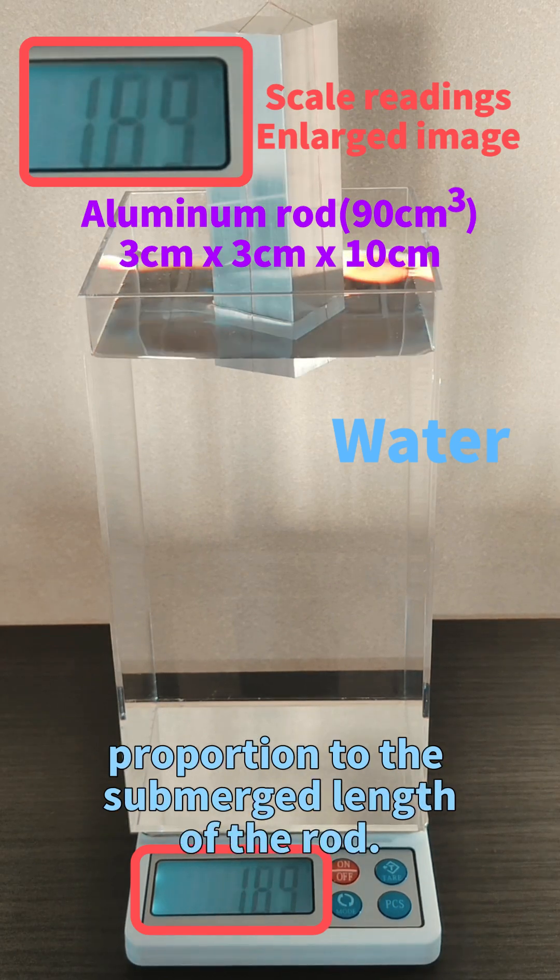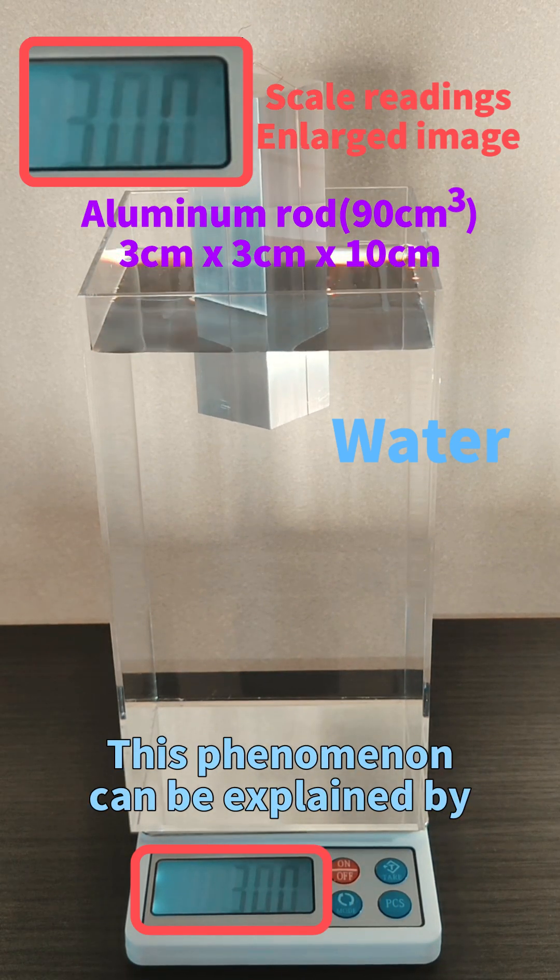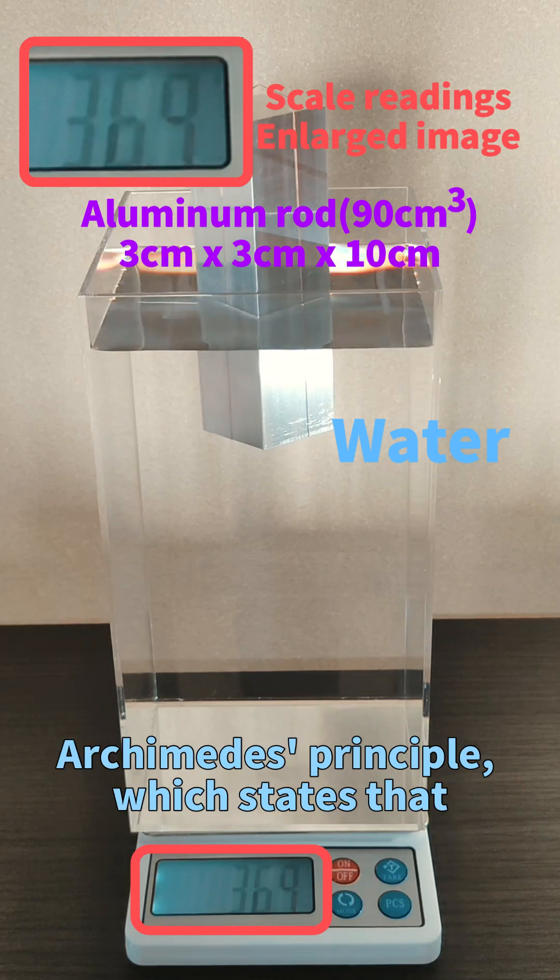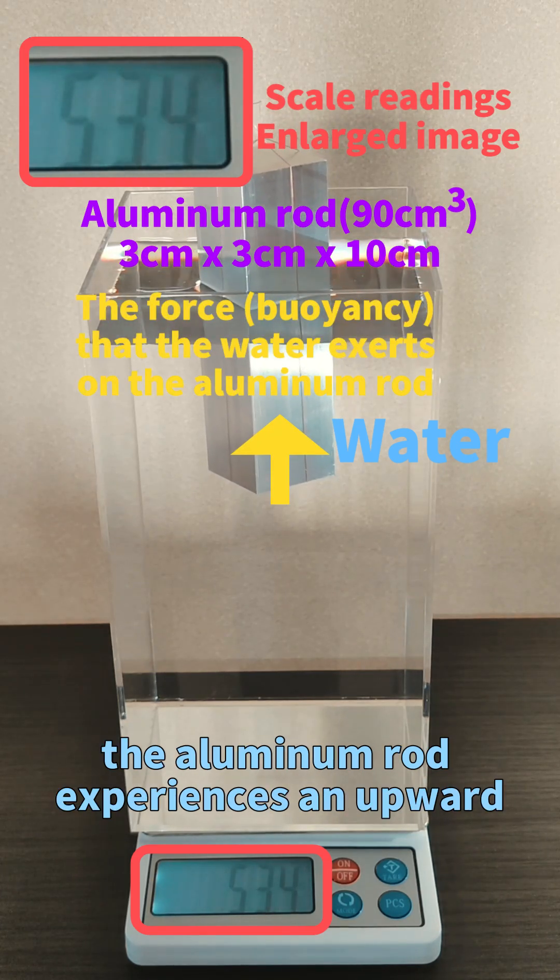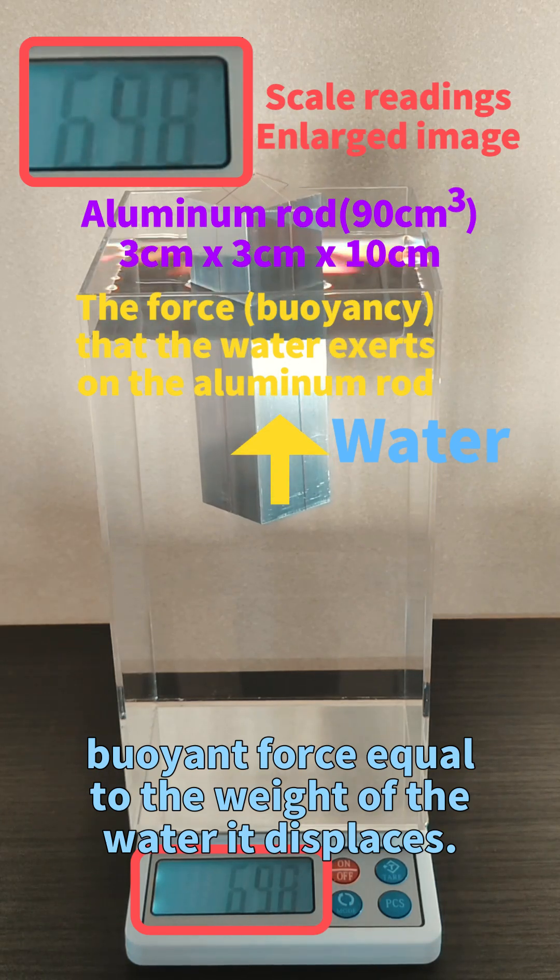This phenomenon can be explained by Archimedes' principle, which states that the aluminum rod experiences an upward buoyant force equal to the weight of the water it displaces.